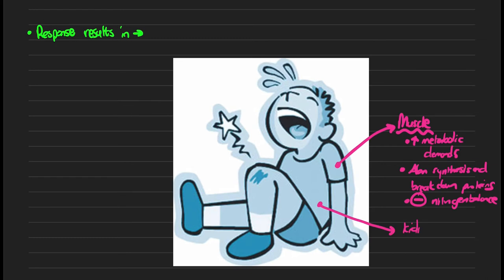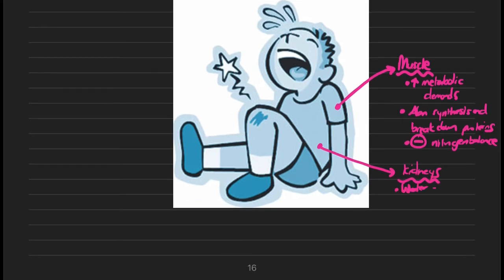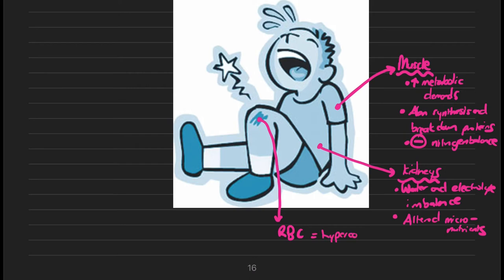If we move through to the kidneys of the patient, these patients typically have water and electrolyte imbalances and they have an altered availability of micronutrients. If you focus on the wound of the patient, think about red blood cells — these patients are typically in a hypercoagulable state.